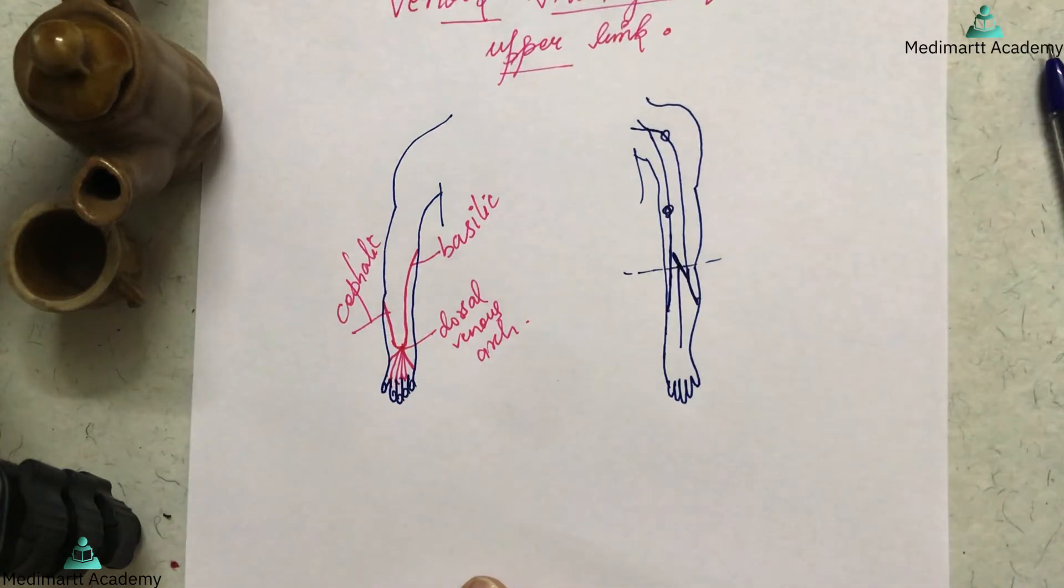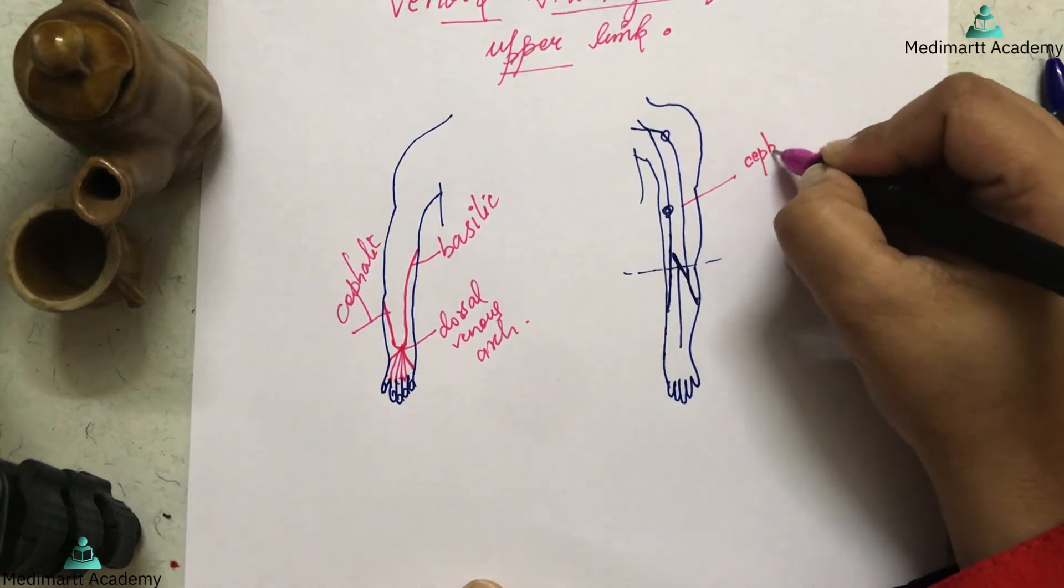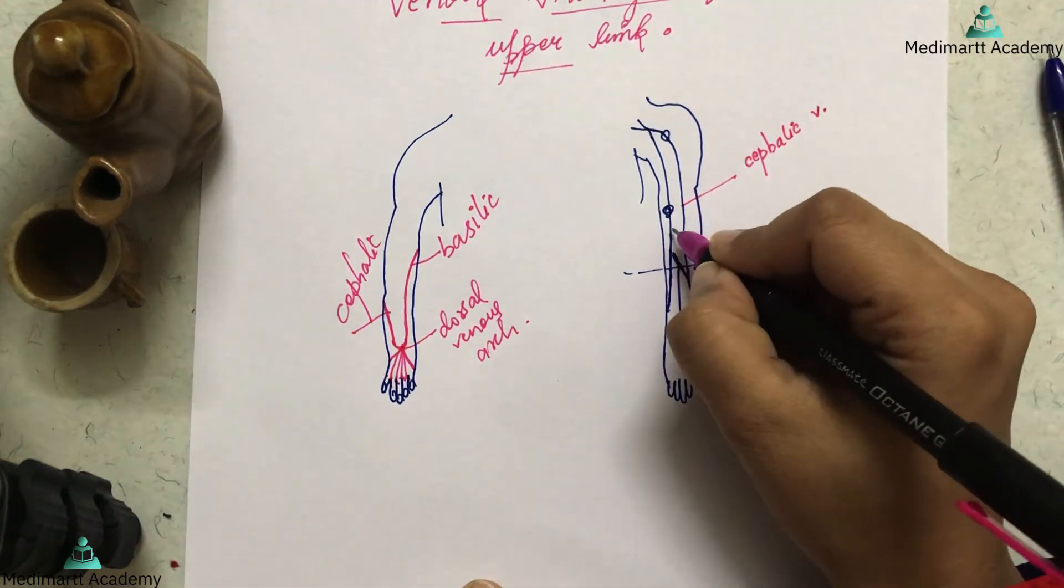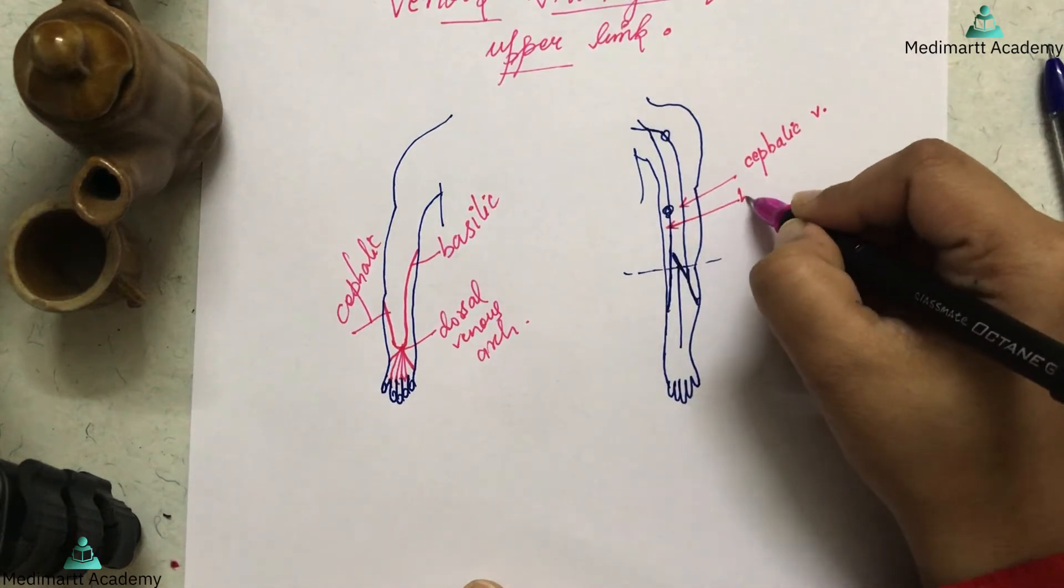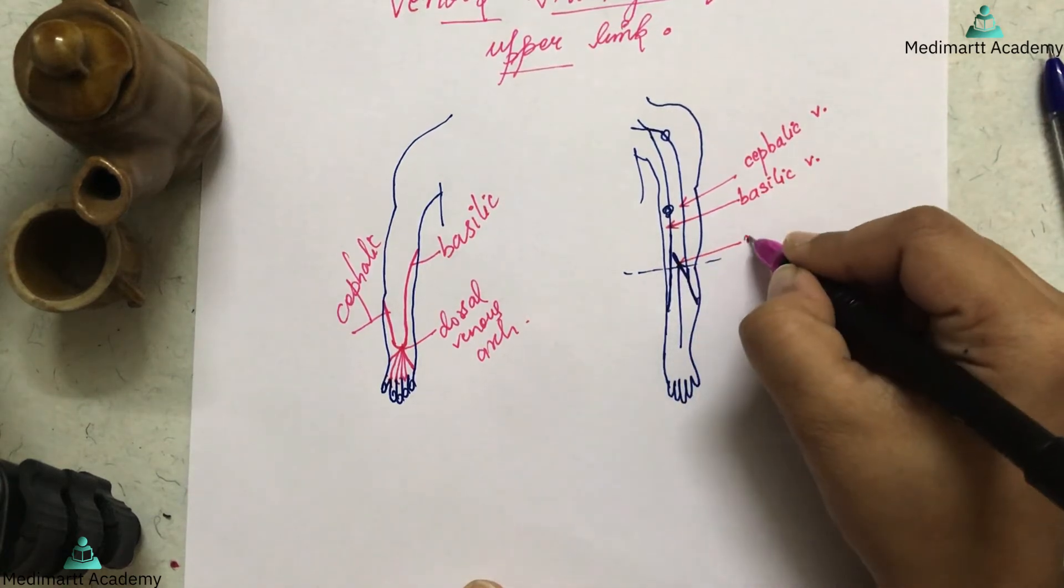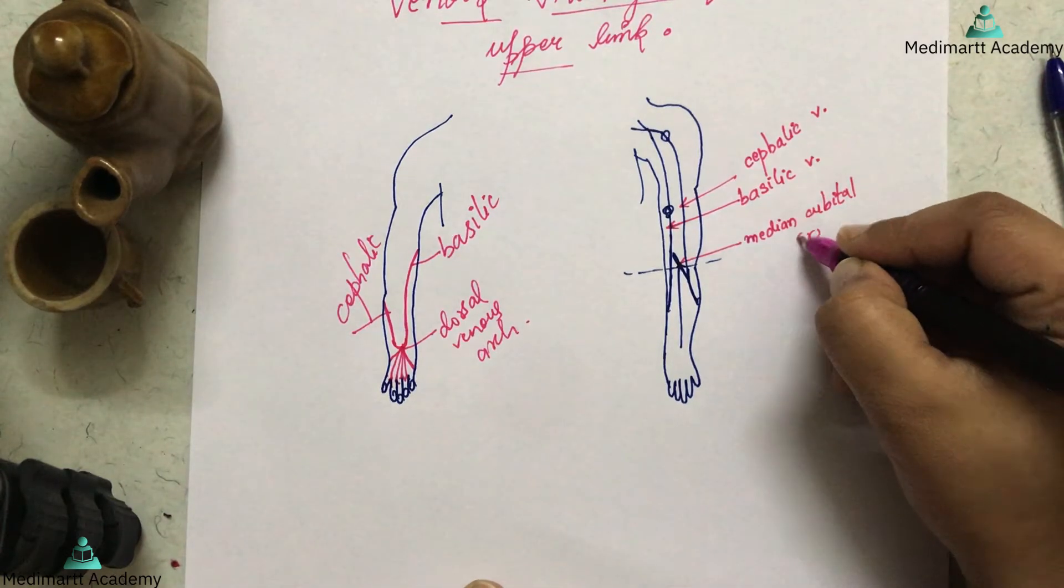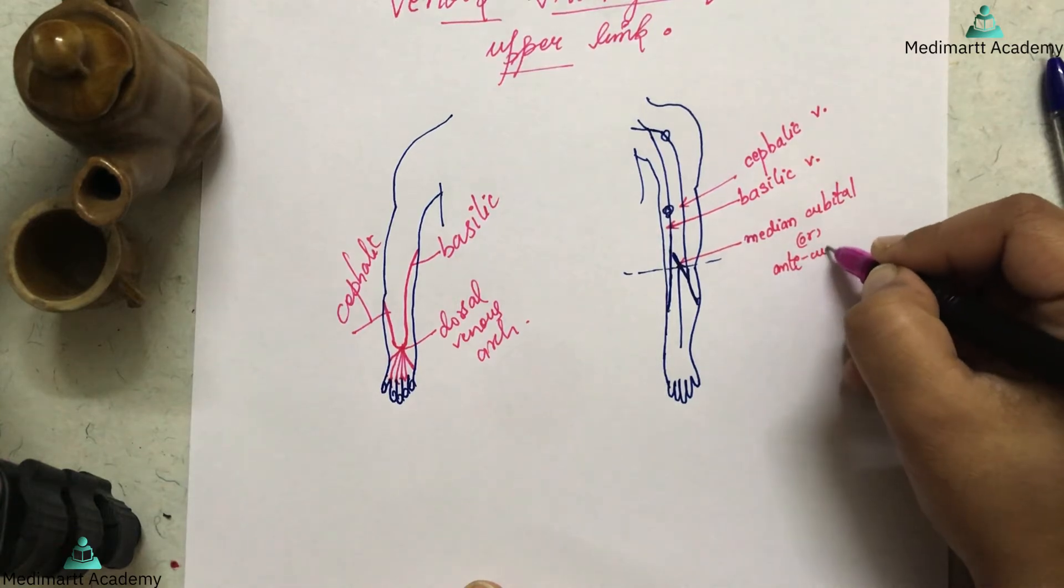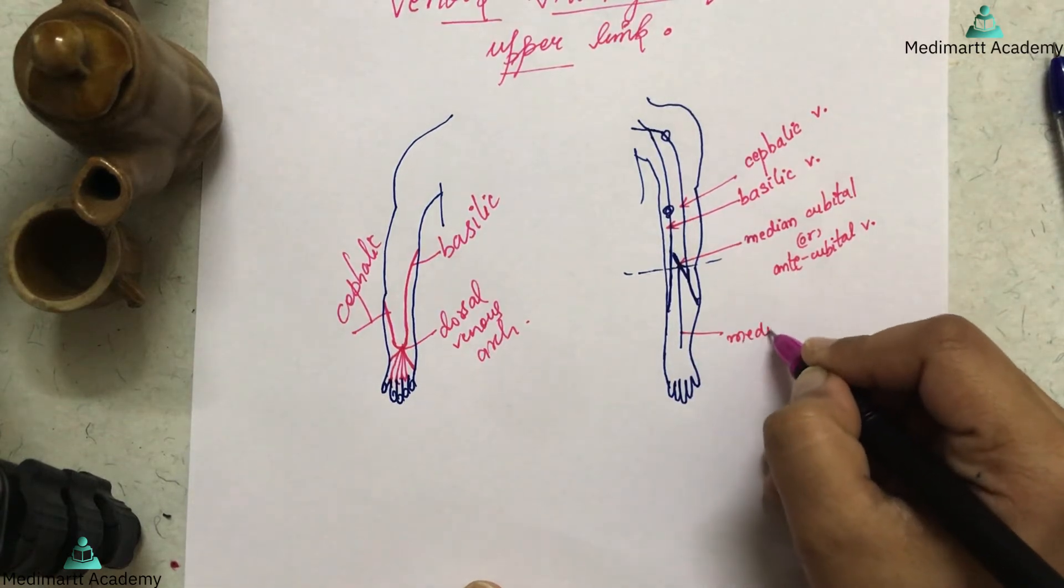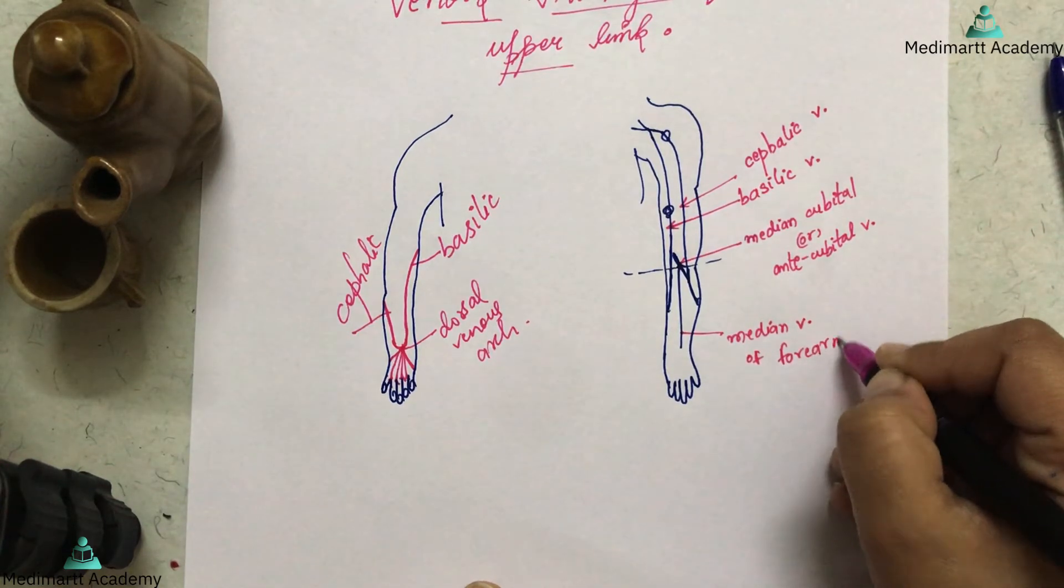Now I will label it. Laterally, here is present the cephalic vein. I'm just writing V for vein. This is your basilic vein. This is your median cubital or anti-cubital vein. This is your median vein of the forearm; whether you write it or not, no problem, but I'm just writing for your convenience.